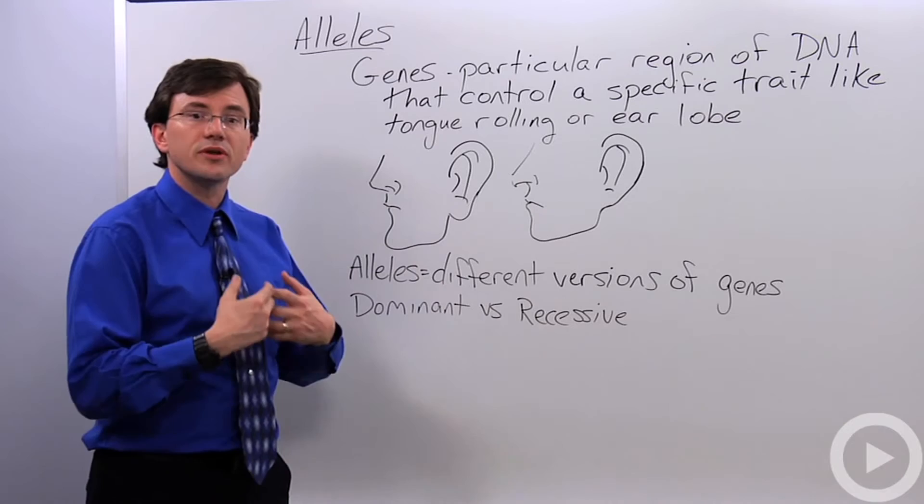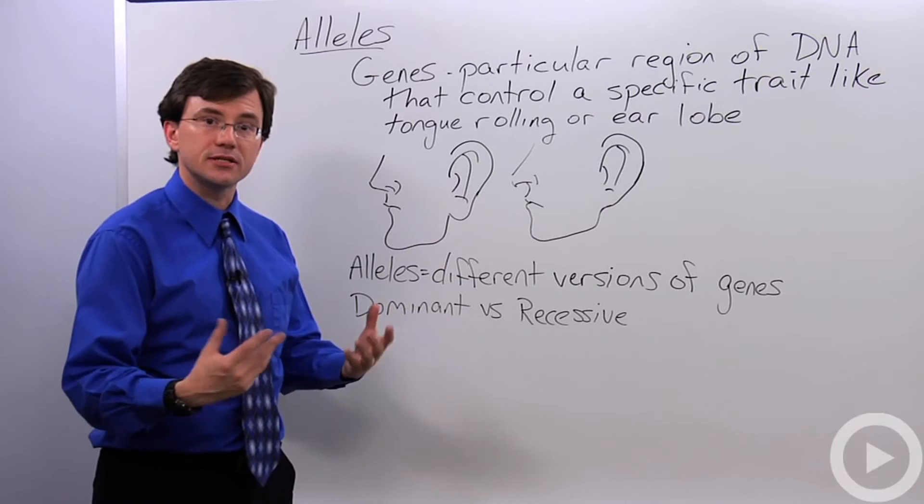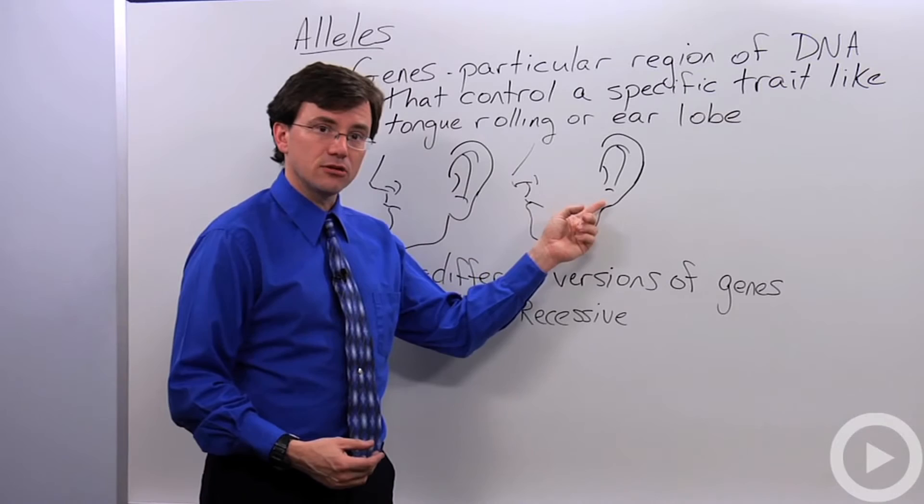Now, something else to understand is that alleles can be dominant or they can be recessive. A dominant allele is one that will show itself in a cell or in a person's body. So, for example, the detached earlobe, the free earlobe, is the dominant allele for this particular gene, for the earlobe gene.